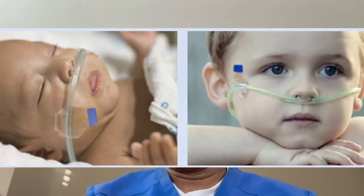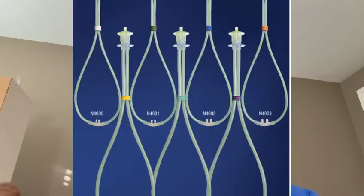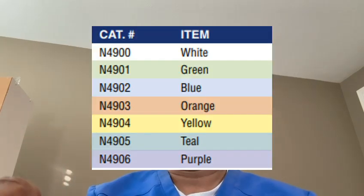Monitor for septal breakdown and check the position of the cannula with every shift or more often. Images show how it can be secured so the patient is comfortable, and also show neonatal and pediatric patients with RAM cannula in place. The RAM cannula is available in different sizes for neonates — micro preemie, preemie, newborn, and infant — all color coded. In pediatrics it is available in three different sizes, also color coded.